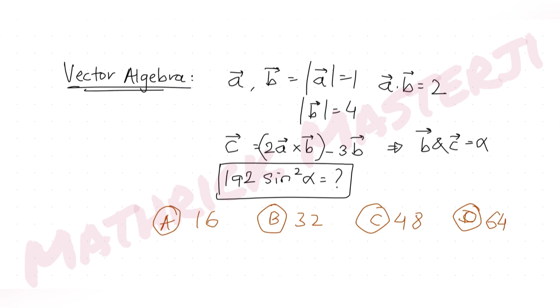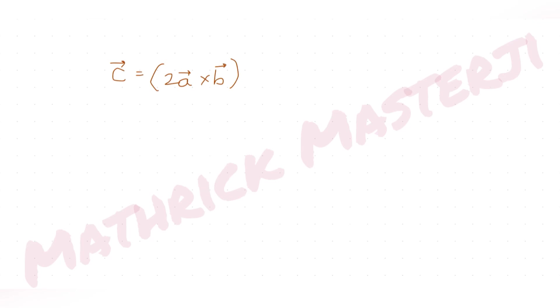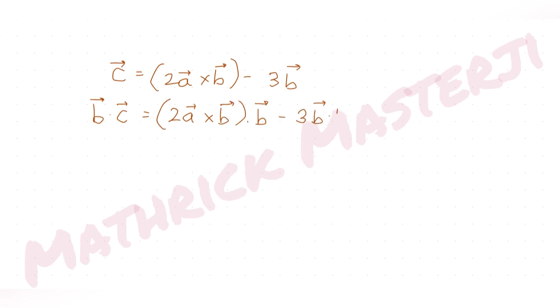To solve this, we have c = 2a × b − 3b. Now, let's take the dot product of b with c. The term b · (2a × b) becomes a scalar triple product: 2[a, b, b].